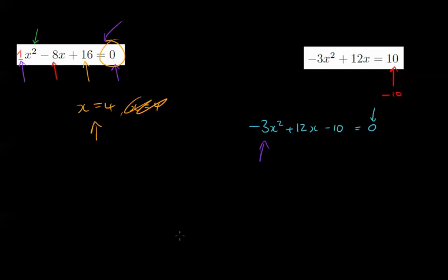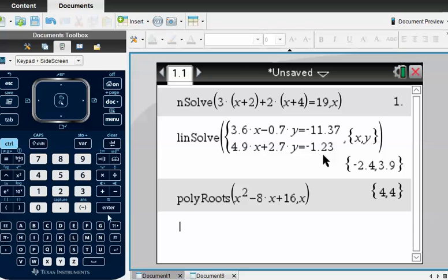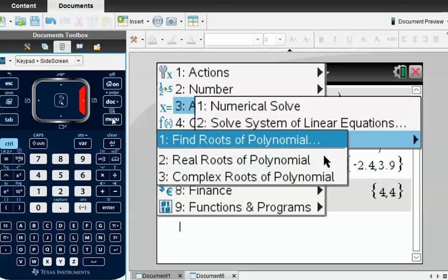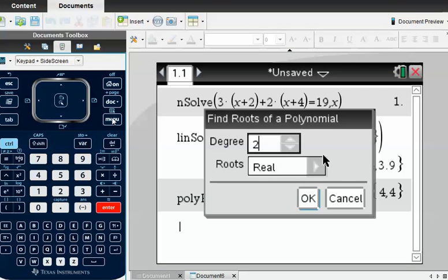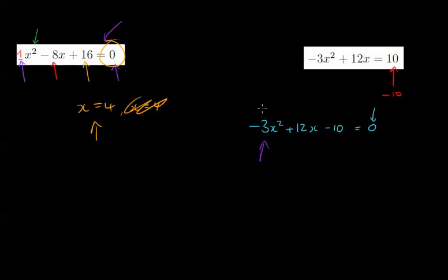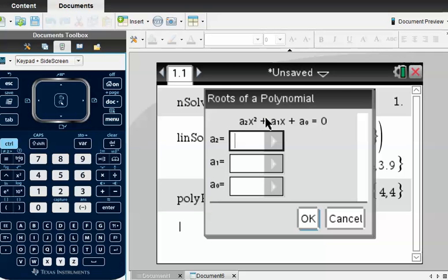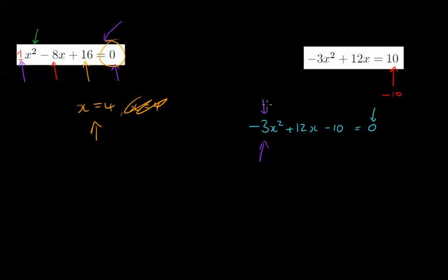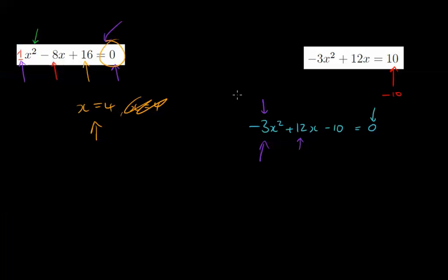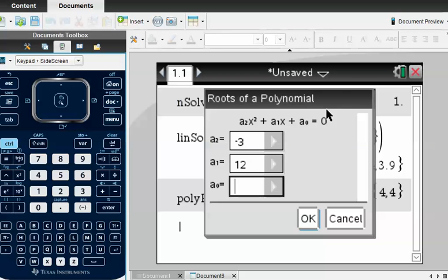Let's solve this quadratic equation now. So go to Menu, Algebra, Polynomial Tools, Find Roots of Polynomial. Press OK on that. First of all, what number's next to the x squared? Well, that's a minus 3. What number's next to the x? It's 12. And what number's on its own? Just be careful, that minus belongs to the 10. So it's a minus 10. That's on its own. Press OK.